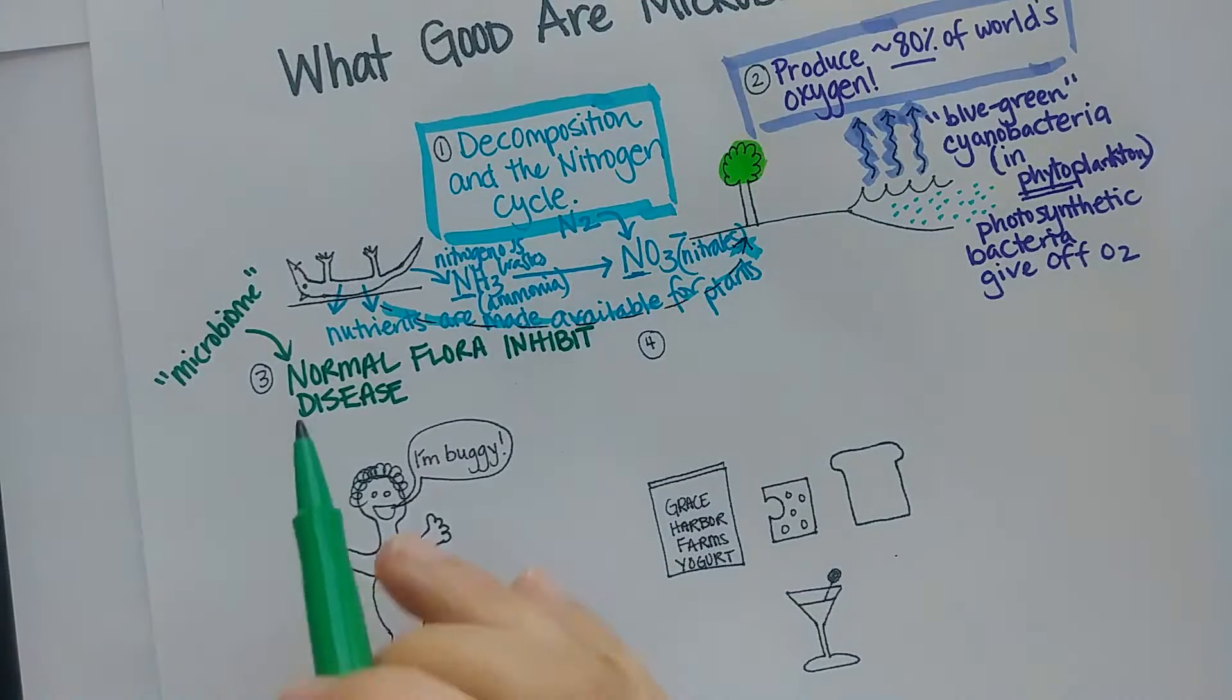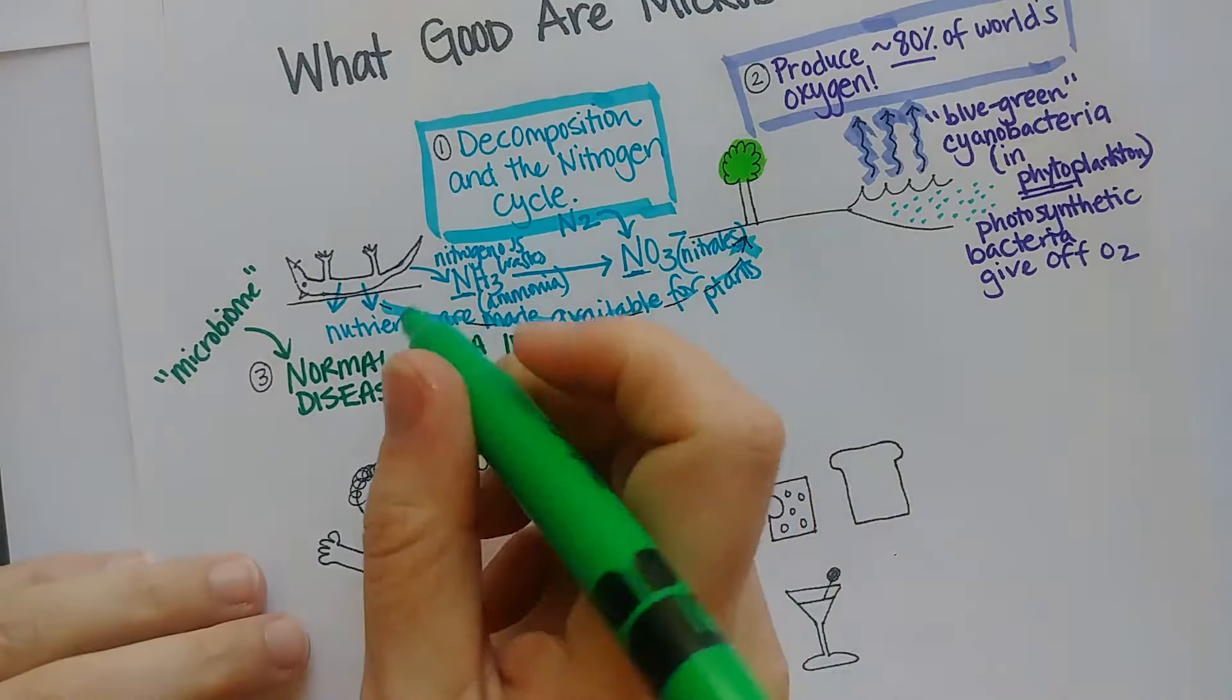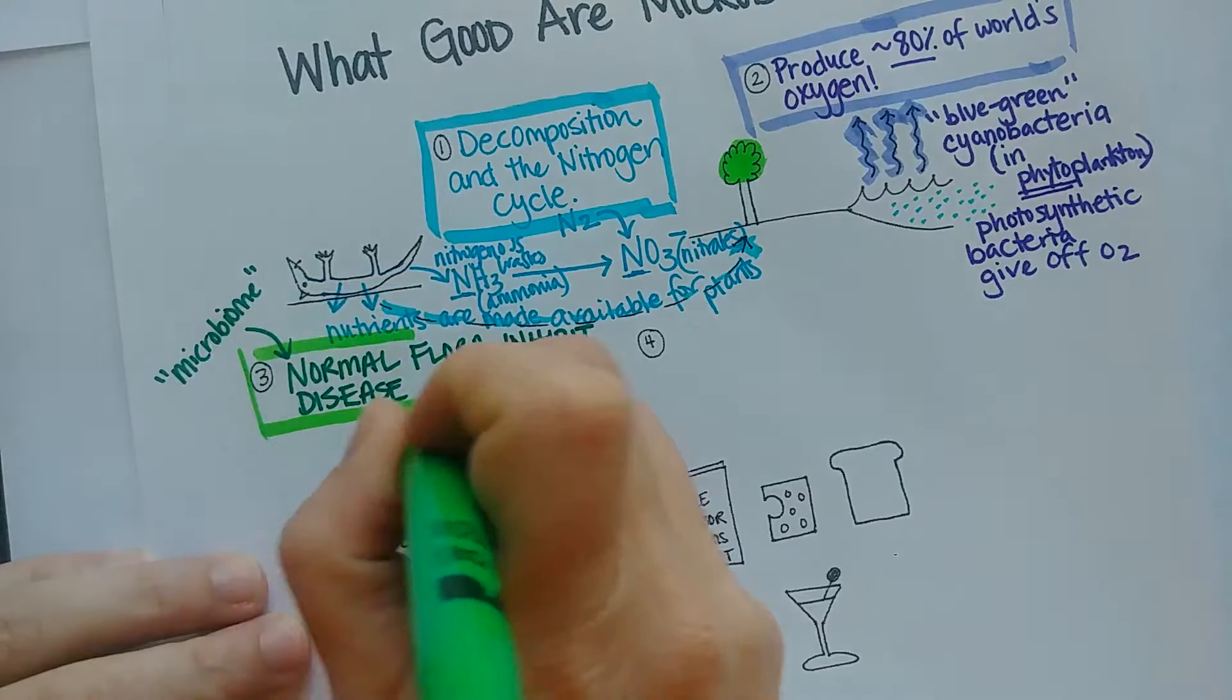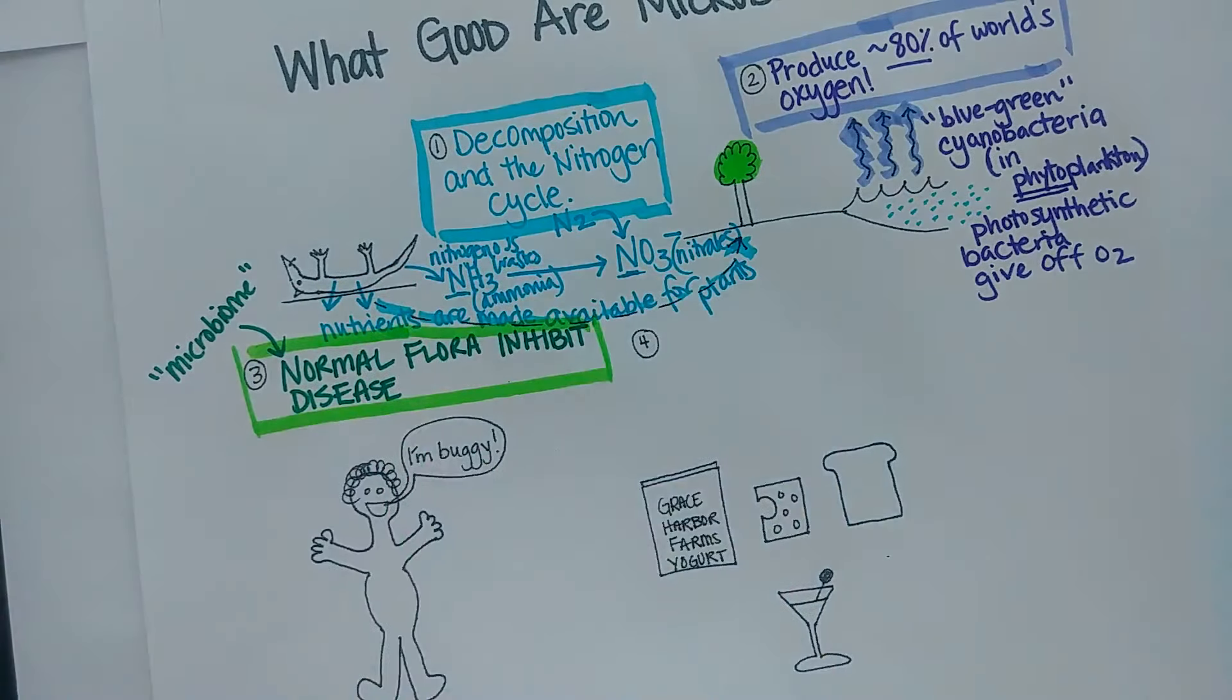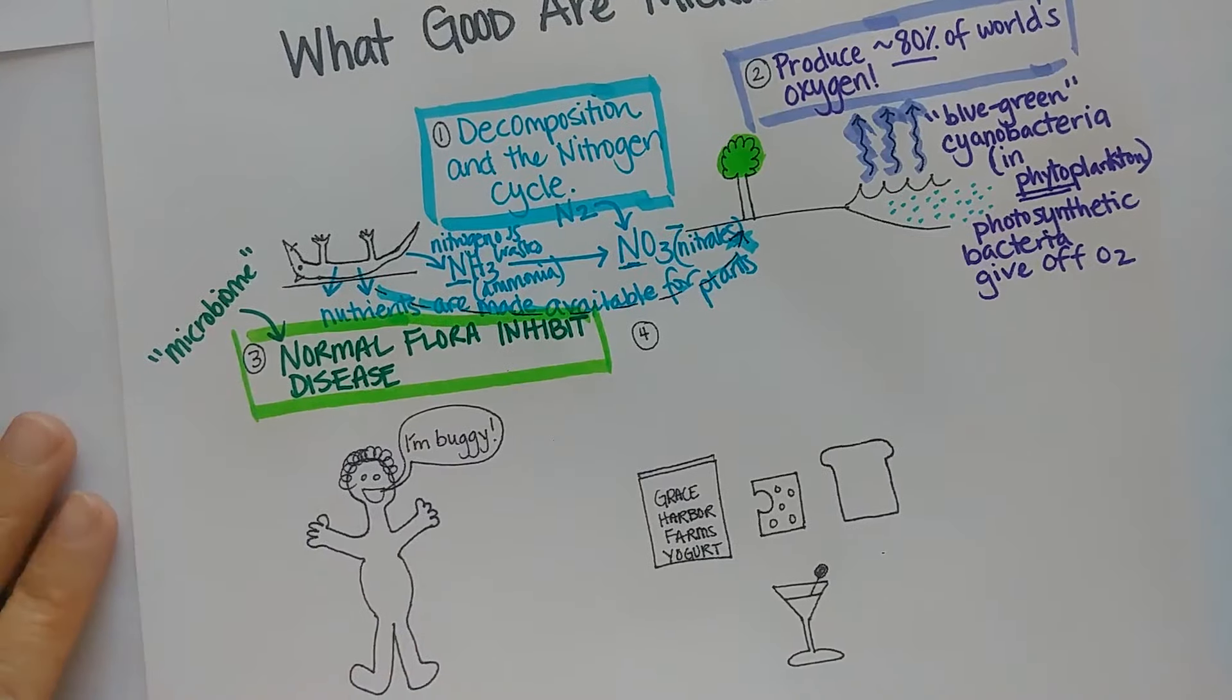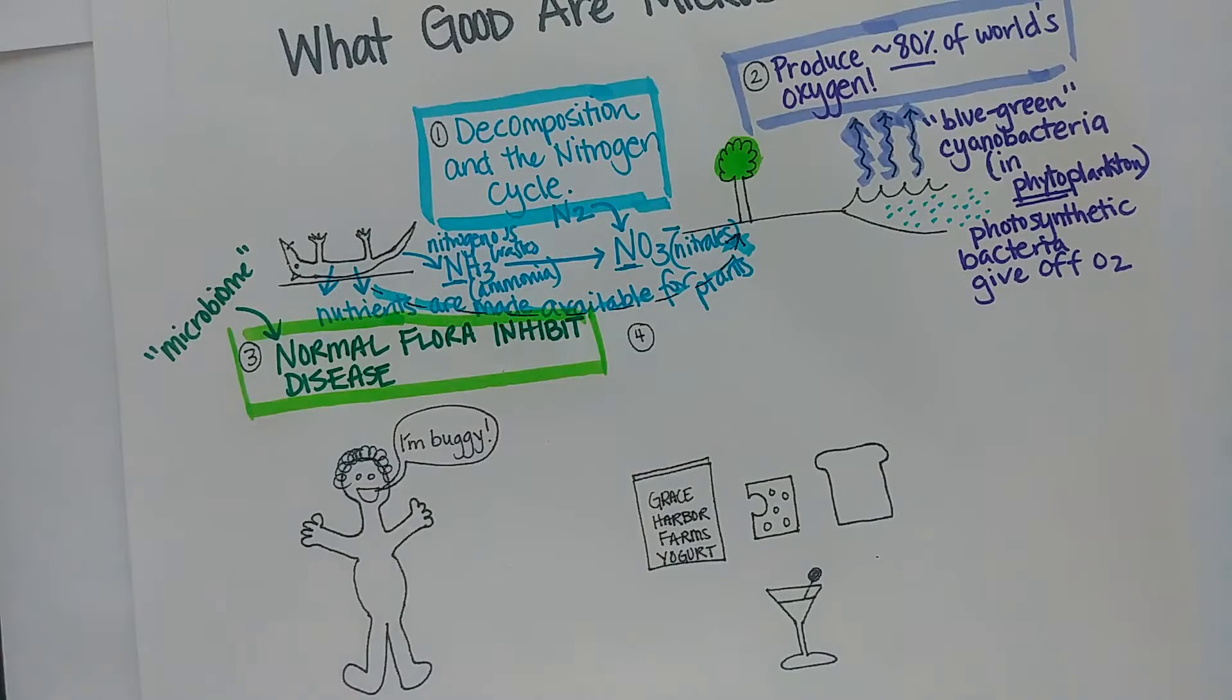And that refers to all the organisms that live on and in your body. Now I'm going to give you some examples. You're completely covered with microorganisms on the inside and the outside of you. About ten percent of all the cells that are on and in you are actually human cells, and all the rest are microorganisms.